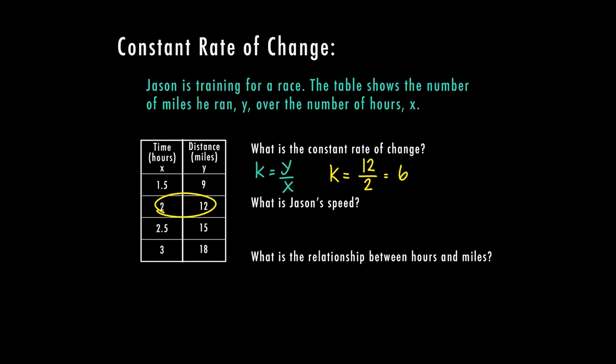I can also try it out with maybe this last one down here because it's also going to be whole numbers. And that's usually easier to work with. So in this case, I'm going to do 18 for my y divided by 3 is my x. And again, I get 6. So it looks like 6 is going to be the constant rate of change or my k.